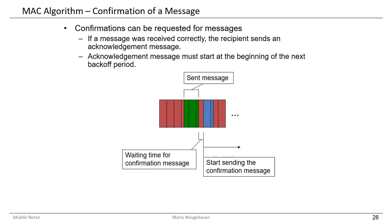After the message is sent properly, it may be required that a confirmation be sent from the receiver. The sent message is the green one, and we have to wait a certain time after it was sent before the confirmation is sent from the receiver back to the originator. The sender then knows whether the message was received correctly or whether errors were detected and the message should be retransmitted. Note that the confirmation message must also start at a certain backoff period, so a waiting time applies before sending the confirmation.